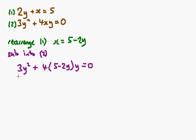So all I need to do now is multiply that bracket out. So, I've got 4 times 5 is 20, times by y, so that's 20y.